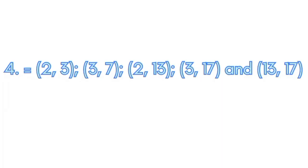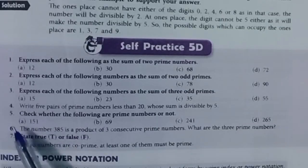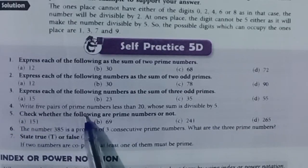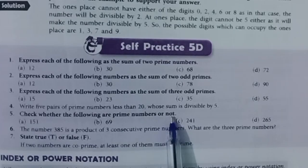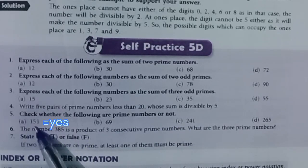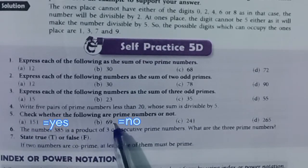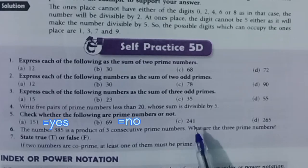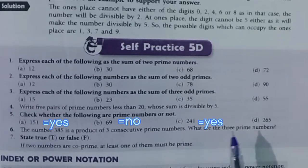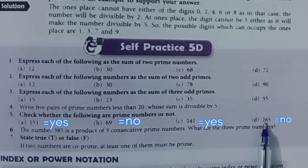Question 5: Check whether the following are prime numbers or not. A. 151, yes. B. 69, no. C. 241, yes. D. 265, no.